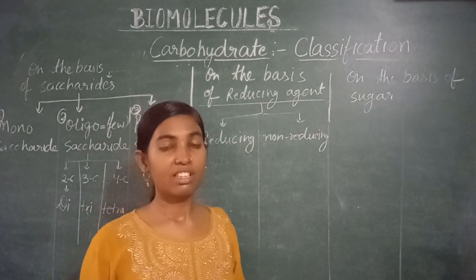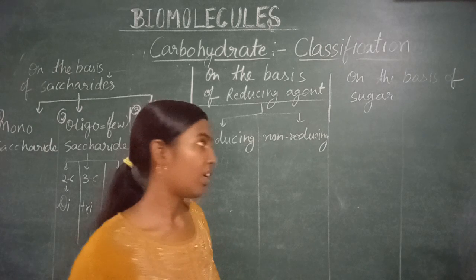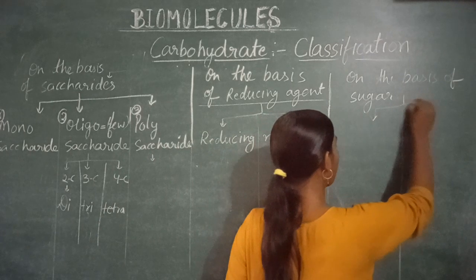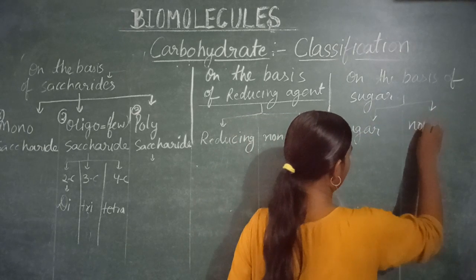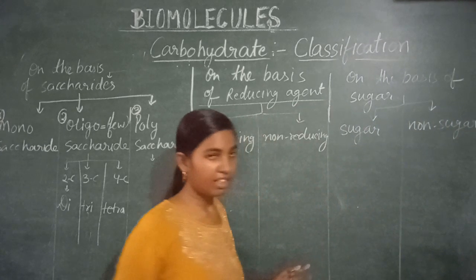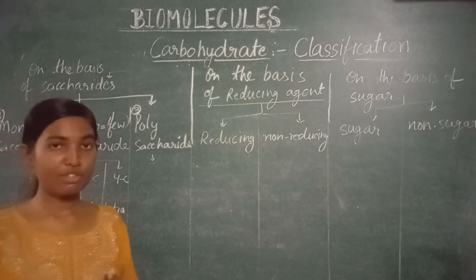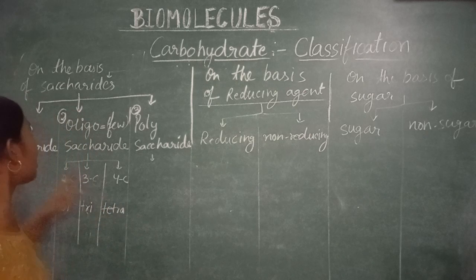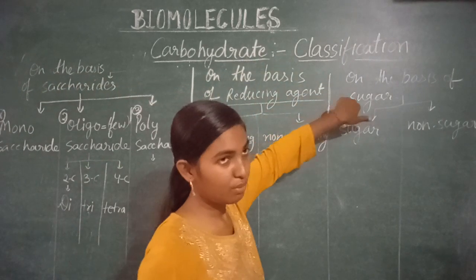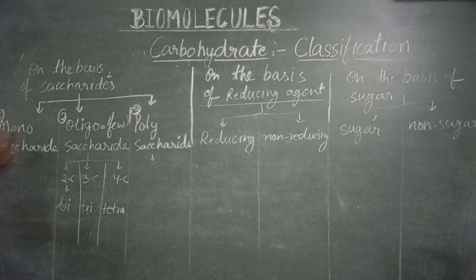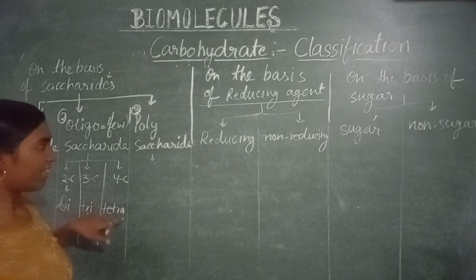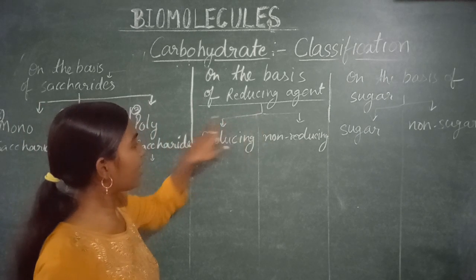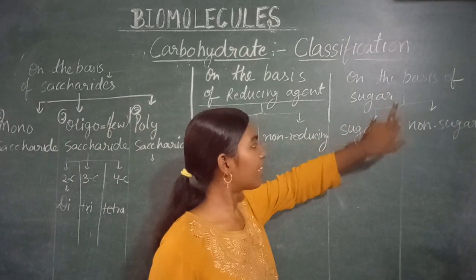On the basis of sugar — that is, on the basis of sweetness — carbohydrates are divided into two parts: sugar and non-sugar. So the overall classification is done into three parts: on the basis of saccharide (mono, oligo, and poly; oligo further divided into di, tri, and tetra), on the basis of reducing agent (reducing and non-reducing), and on the basis of sugar (sugar and non-sugar).